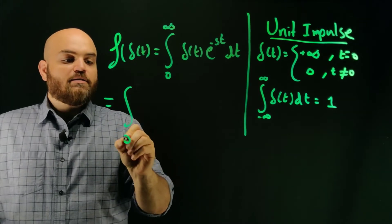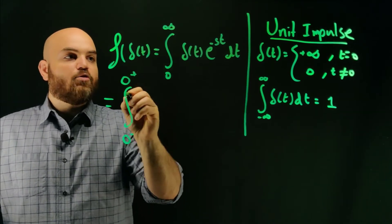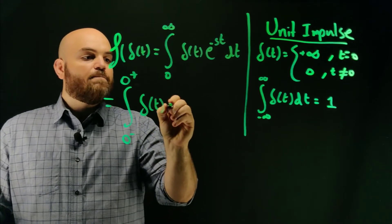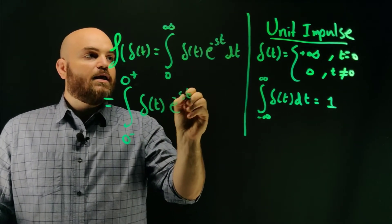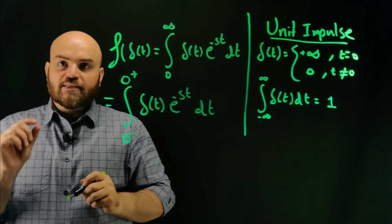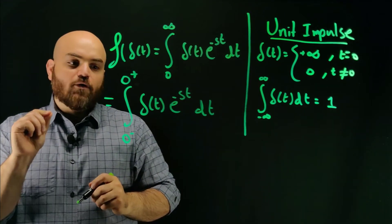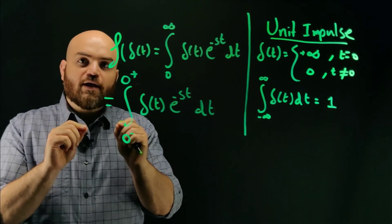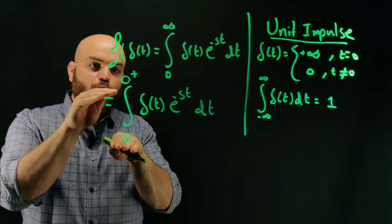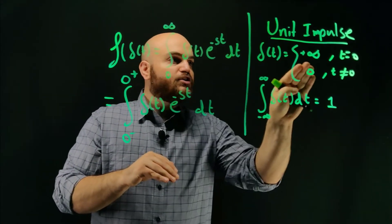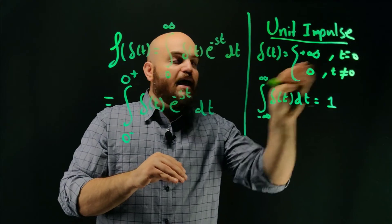They can be written to be zero minus to zero plus, I'll explain what that means in a second, of delta e minus st dt. And so zero minus is the time right before zero, just right before, and zero plus is the time just right after zero. So this integral bounds are really tight. And that's just because of the nature of this impulse function and how it only is defined at t equals zero.